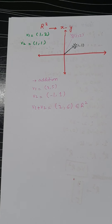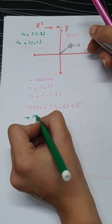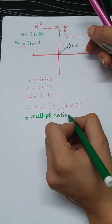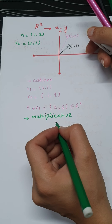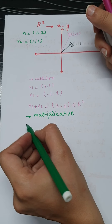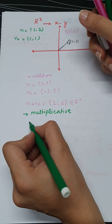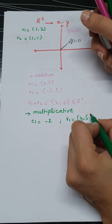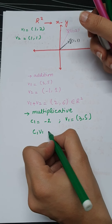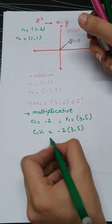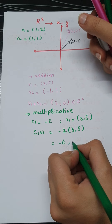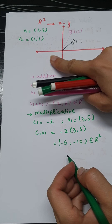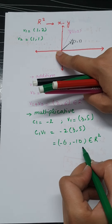Next we check the multiplicative property. These two properties are the essential ones to check in order to claim that a set of vectors forms a vector space. If C1 = −2 and V1 = (3,5), then C1 times V1 equals (−6,−10), which falls in the third quadrant where both x and y are negative — it is still representable in R2. So both properties hold.